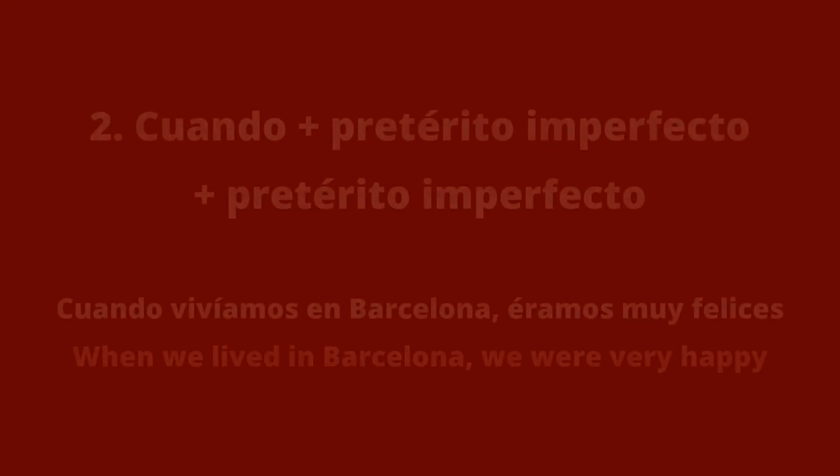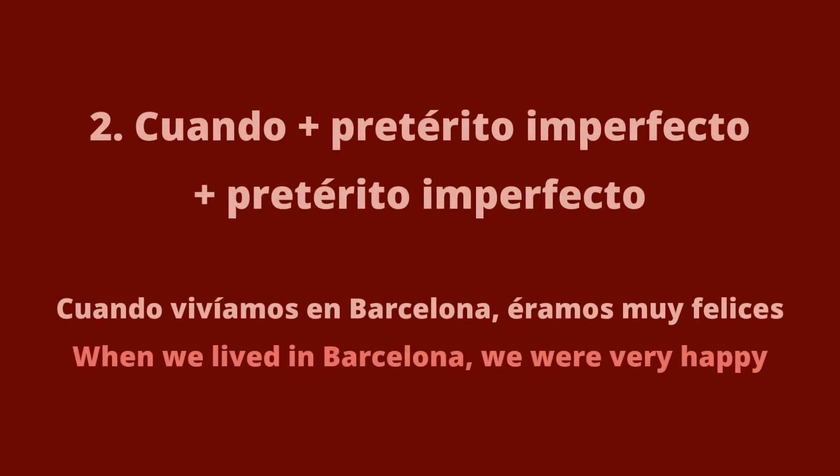Let's see an example in the past. If you want to say 'when we lived in Barcelona, we were very happy,' this is: cuando vivíamos en Barcelona, éramos muy felices. The verb after cuando is pretérito imperfecto and the other verb is also pretérito imperfecto, both in indicative.